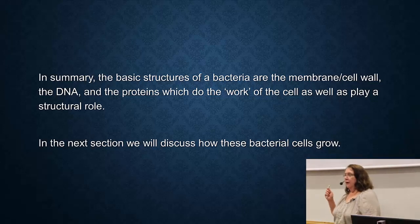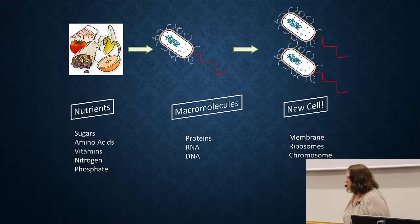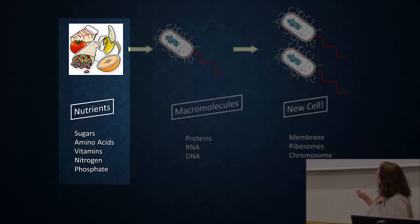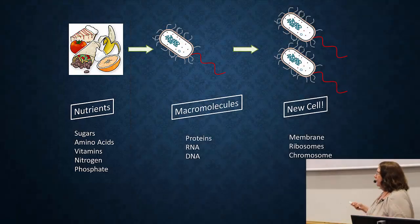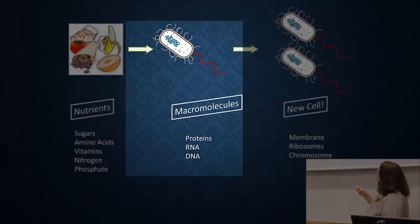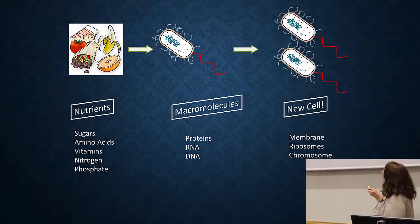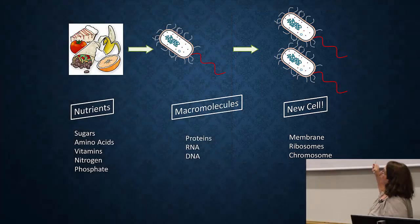In the next section we discuss how cells grow and divide. Like most things, you need food — for bacteria these are nutrients like sugars, amino acids, vitamins, nitrogen, and phosphate. These nutrients are converted into macromolecules, including RNA, DNA, and proteins. Macromolecules are then produced to make up a new cell — you need all these macromolecules to make a copy of the cell.